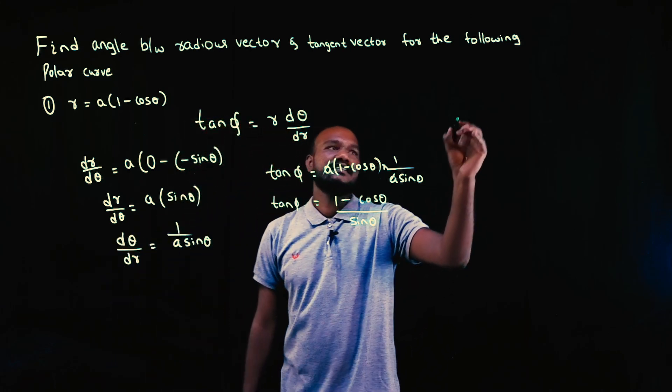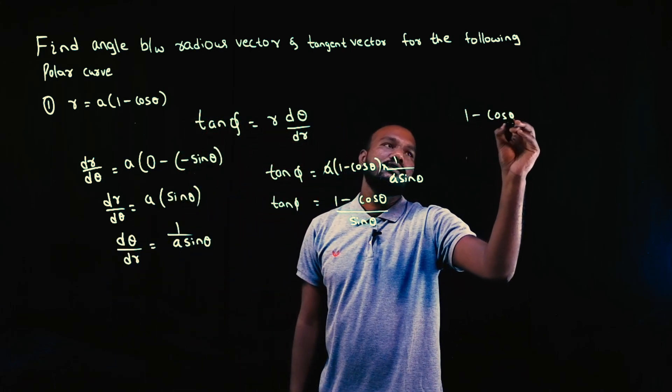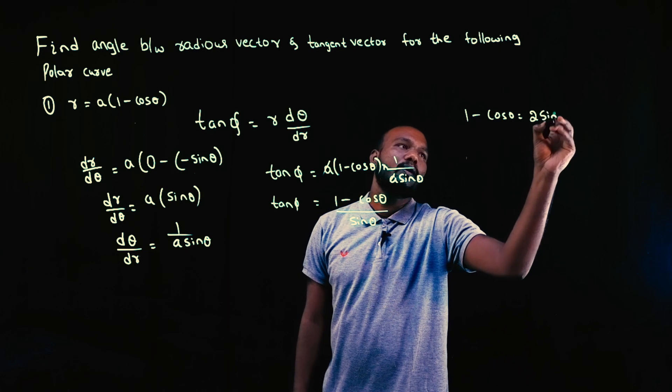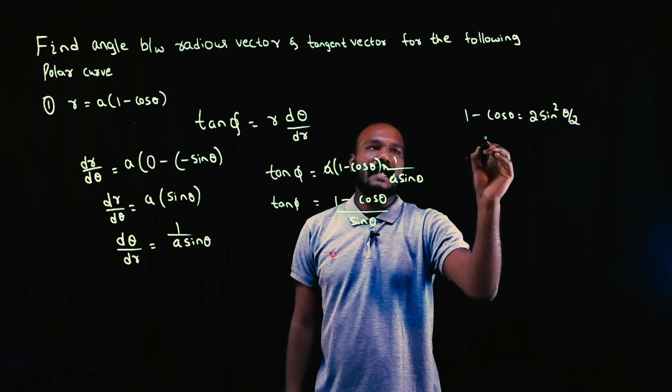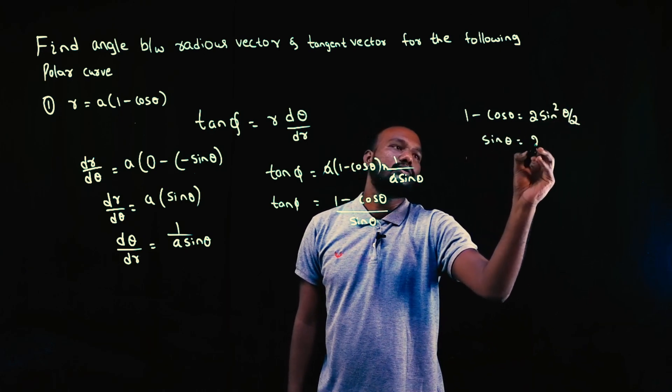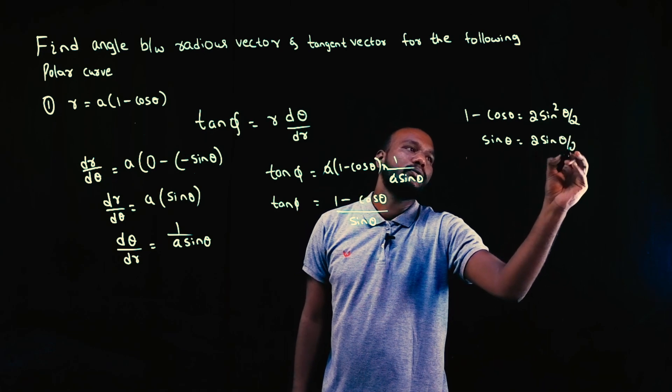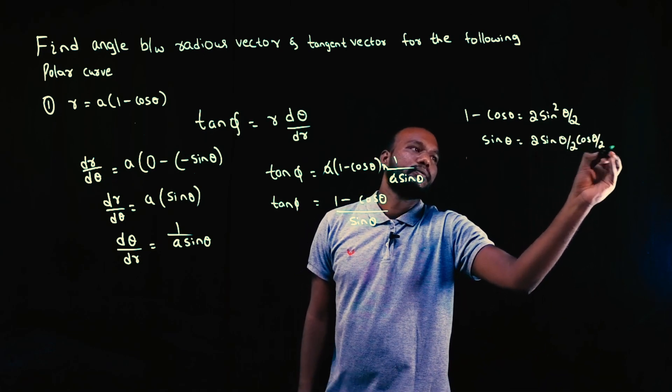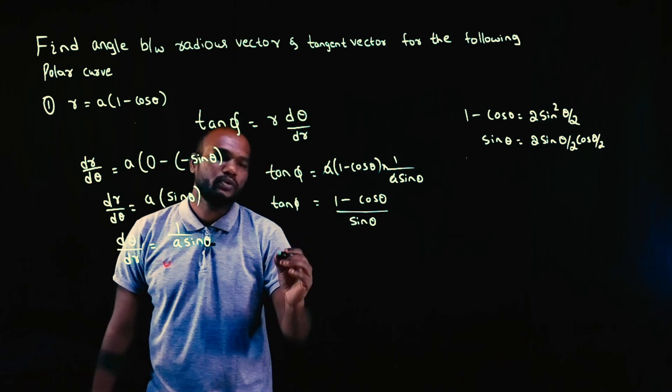But the most important formulas in this module is 1 minus cos θ is 2 sin² θ/2 and sin θ is equal to 2 sin θ/2 cos θ/2. So let's just substitute that.